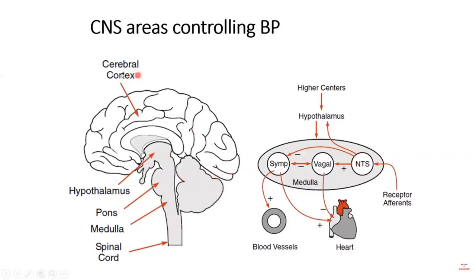The cerebral cortex provides conscious input: when you are scared or relaxed, it affects blood pressure via the hypothalamus, which in turn controls blood pressure via the vasomotor center. So conscious changes in mood, perceived emergencies, disturbing images, sounds, and memories all affect blood pressure through this pathway. However, for day-to-day mundane regulation, it is automatic — governed by afferent nerve action potentials generated at the baroreceptors and sent back to the CNS.